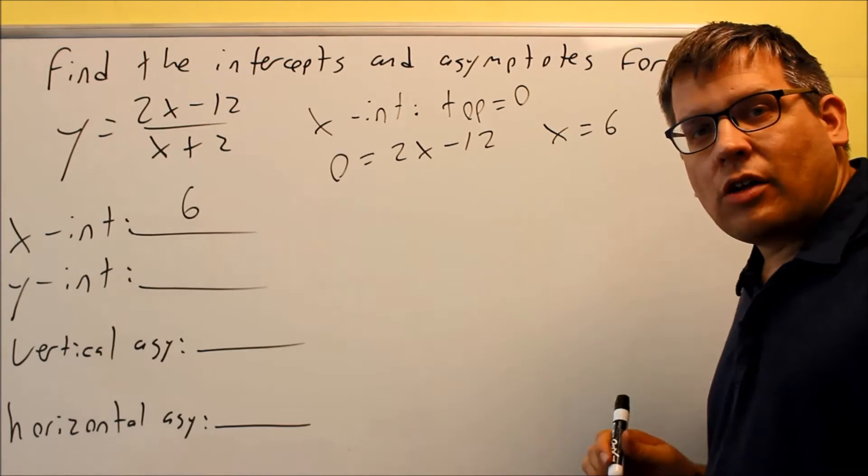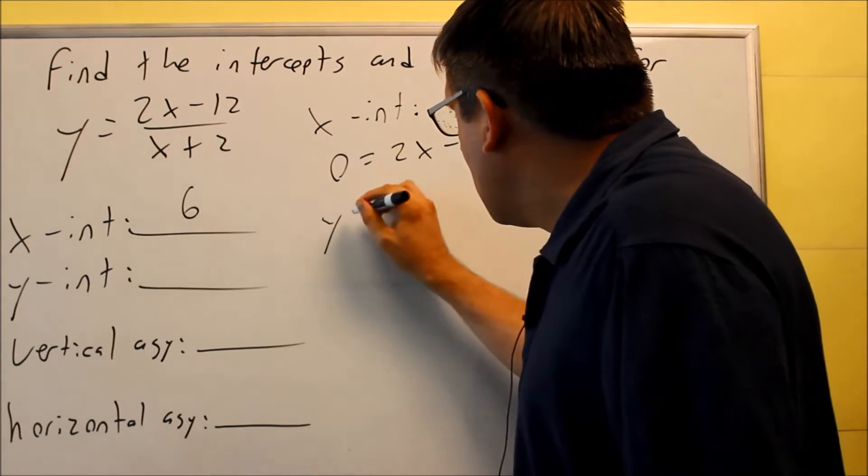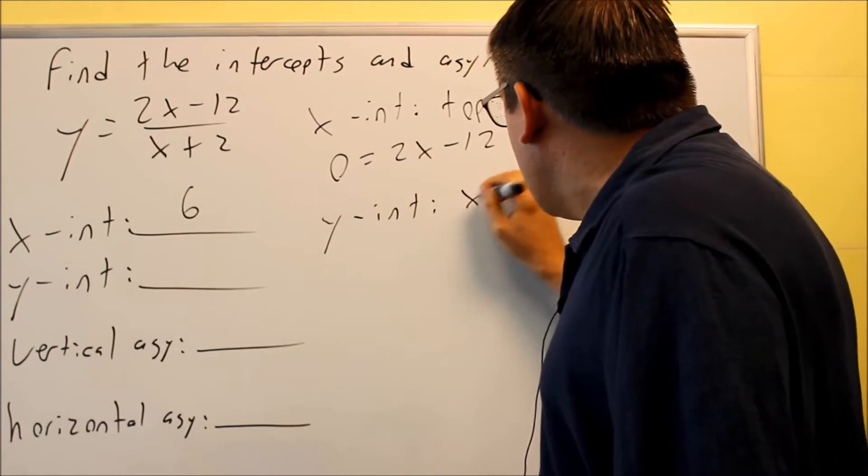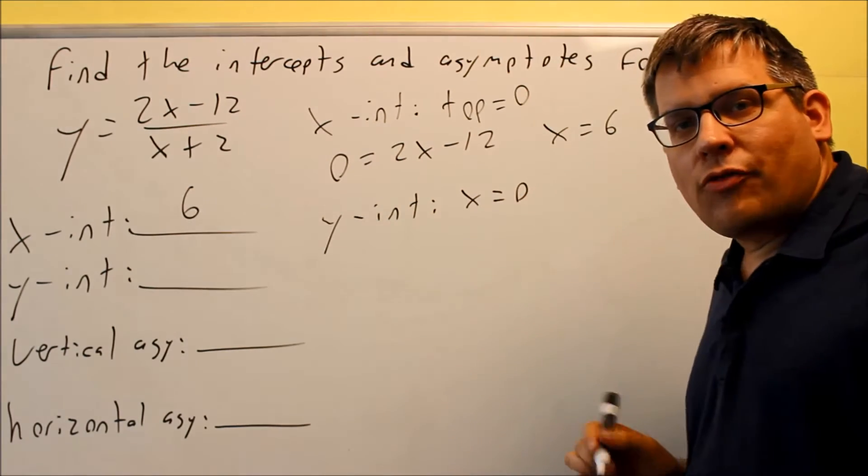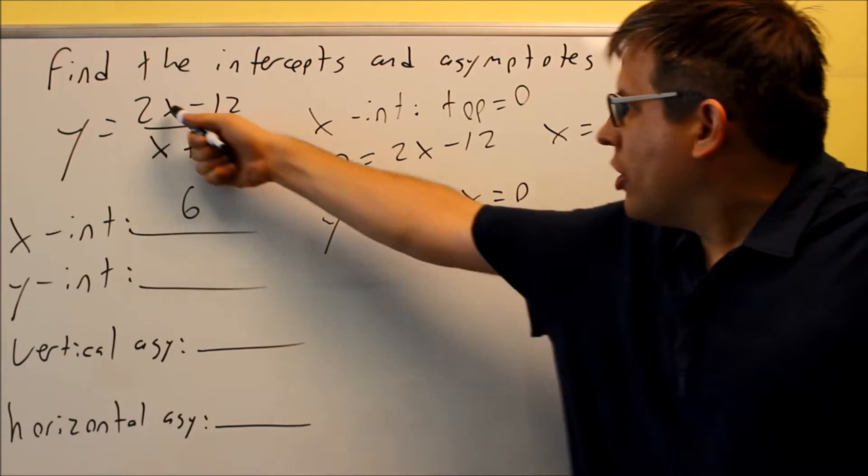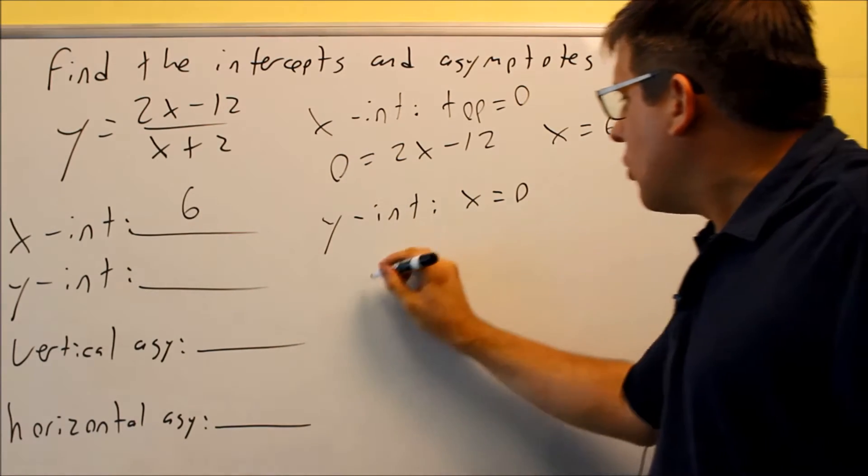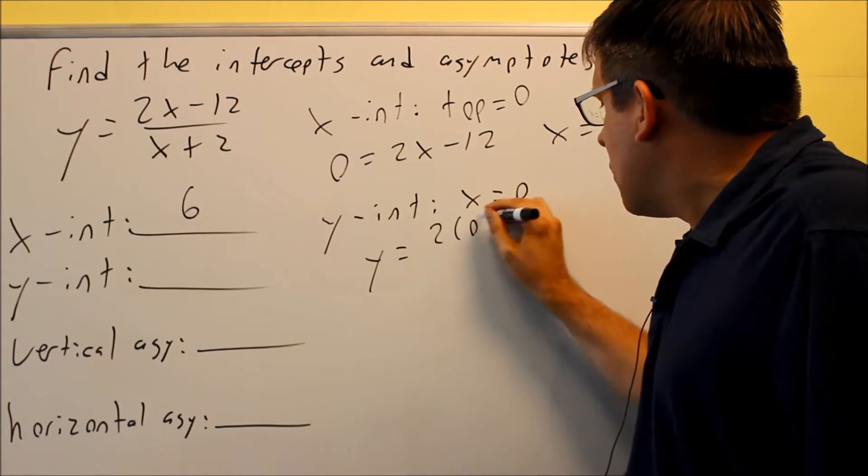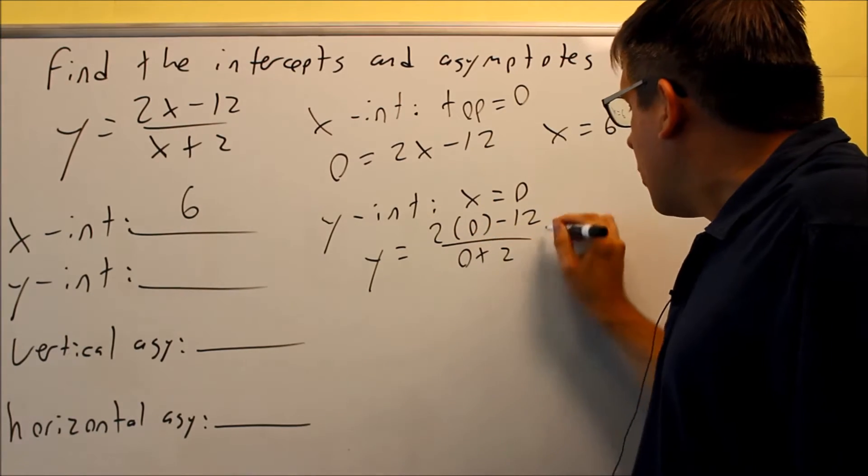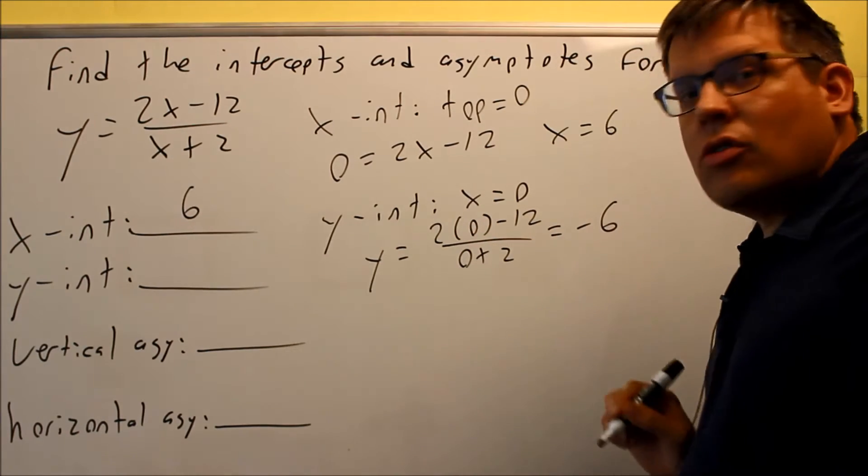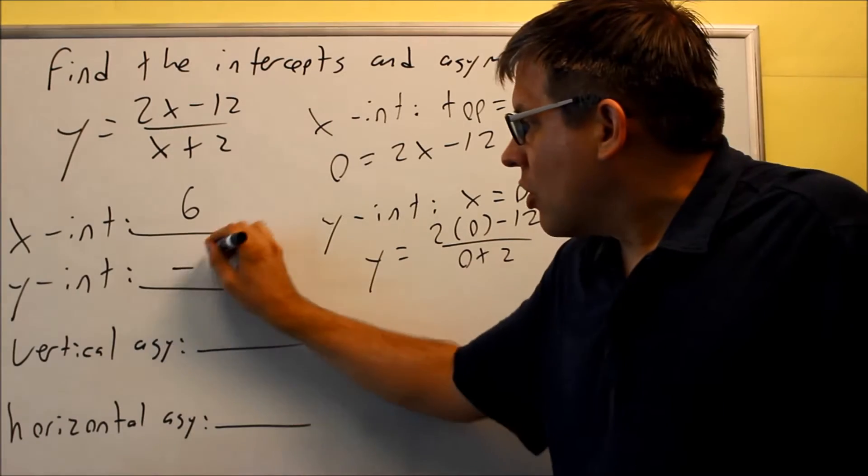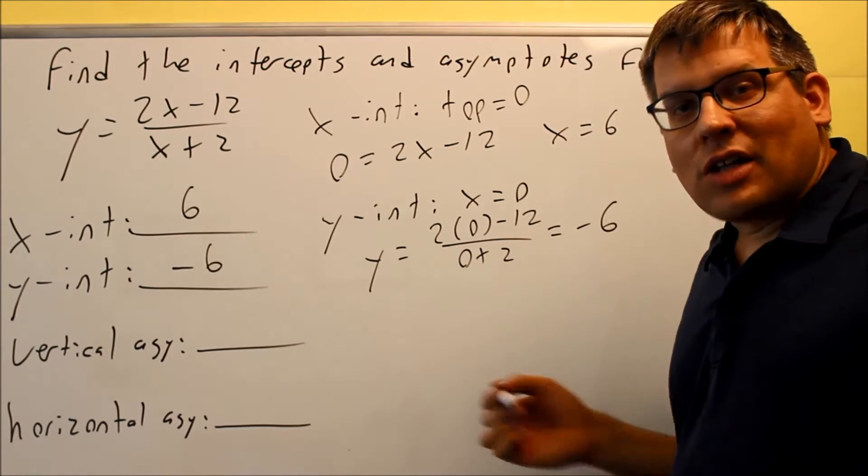Next, you want to find the y-intercept. The y-intercept is no different than any other one. You would put a 0 in there for x. So you put a 0 in both places for x, and it'll look like this. You have 2 times 0 minus 12 over 0 plus 2. That's going to give you negative 6. So it'll cross the y-axis at negative 6.